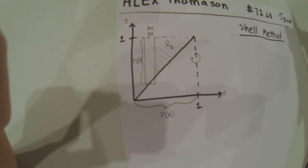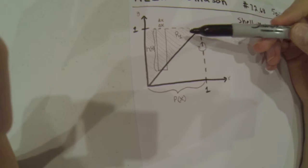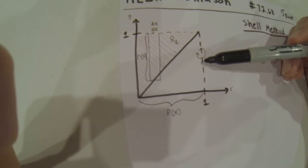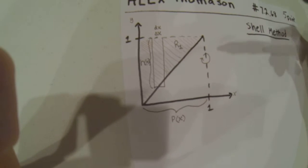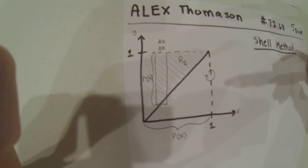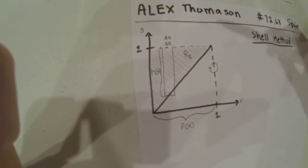The question asks us to rotate this region, region 1, around x equals 1. So this is our axis of rotation. What we need to do is find h(x), which is the height of this rectangle right here, a representative rectangle.